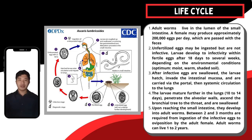Upon reaching the throat, there is a tendency that the parasites are swallowed back into the stomach until they reach the small intestine, where they develop into adult worms. These adult worms can live up to 1 to 2 years.